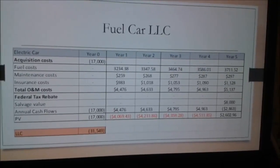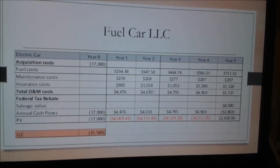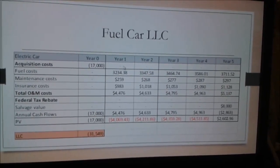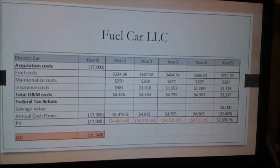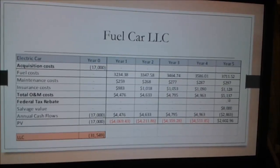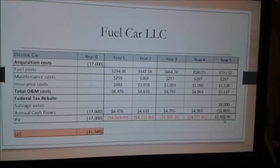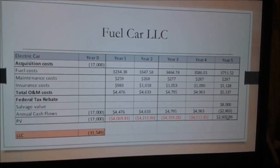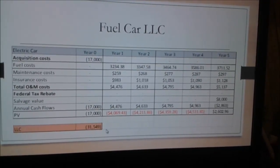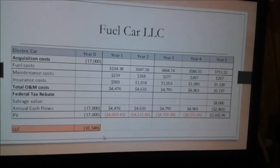Let's take a look at the life cycle cost of the fuel car. In the first year we purchase the car at $17,000. From year 1 to year 5 we incur fuel costs, maintenance, and insurance costs as annual cash flows. In the last year we sell the car at a salvage value of $8,000. Once we know our yearly cash flows we calculate the present value at each year, add all present values together, and arrive at a life cycle cost for the fuel car of $31,000.